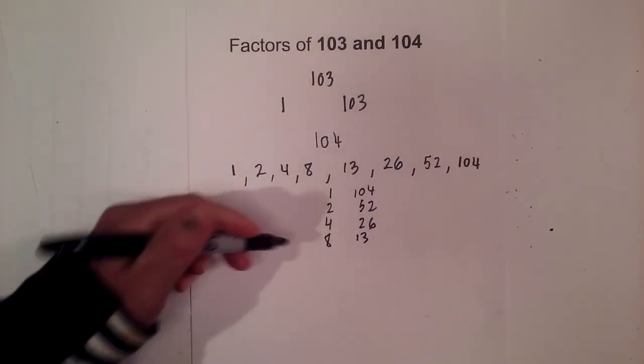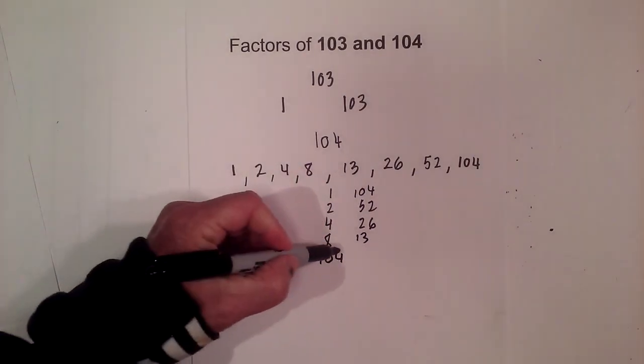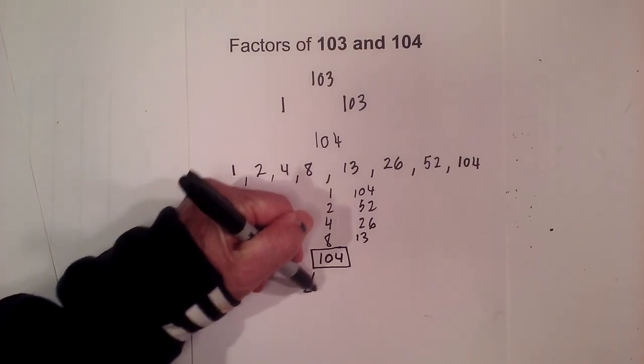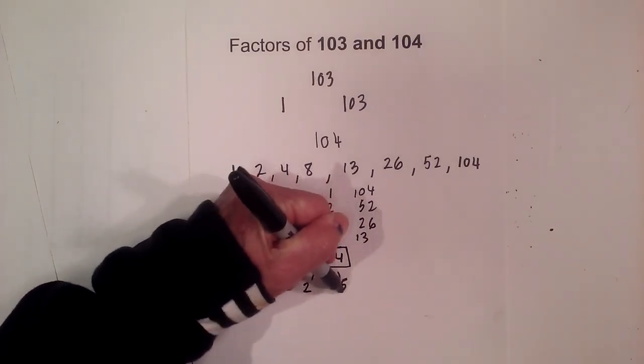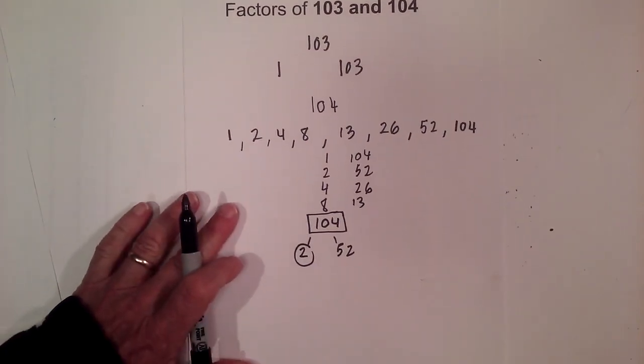Now for the prime factors of 104, I will create a factor tree. I'm going to put this in a box so it's easy to see. Let's begin with 2 times 52. Circle the 2 because it is prime.